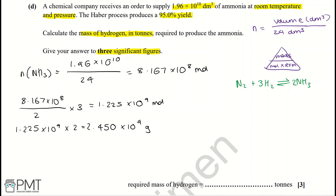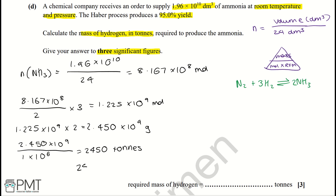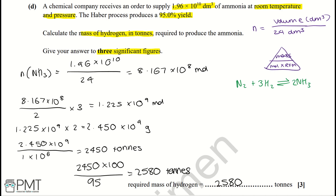Converting to tonnes: 2.450 × 10⁹ / 1 × 10⁶ = 2,450 tonnes. This is the mass for a 100% yield. To account for the 95% yield, we do 2,450 × 100 / 95 = 2,580 tonnes, which is to three significant figures as required.